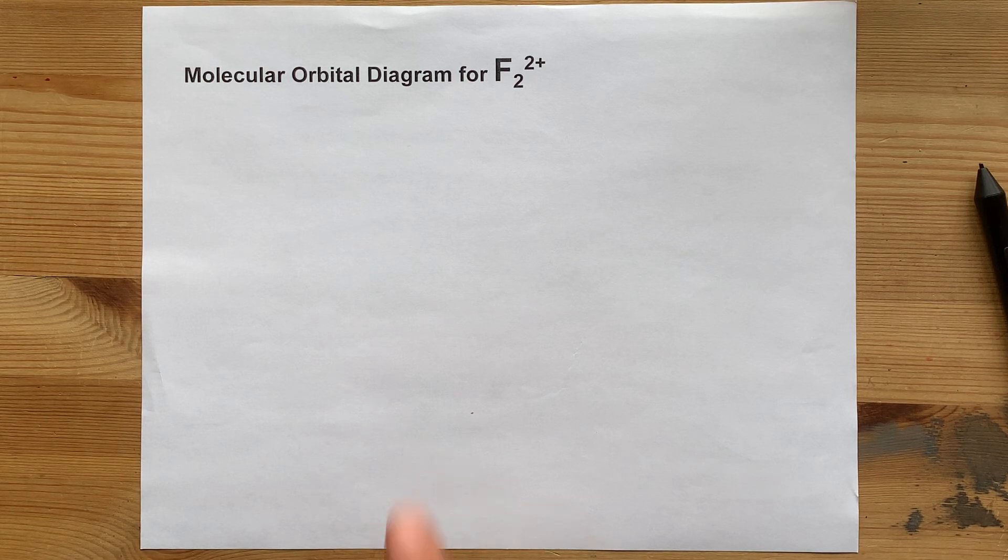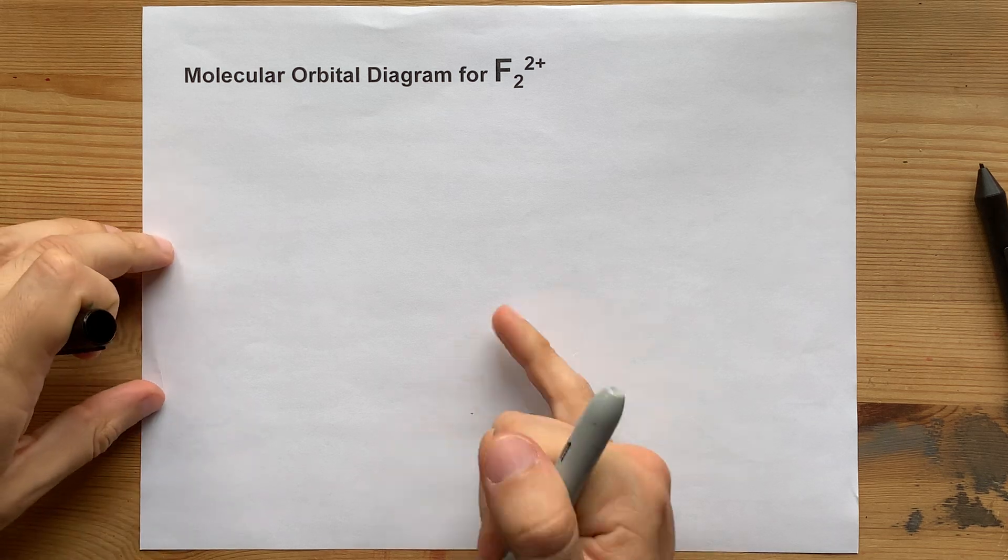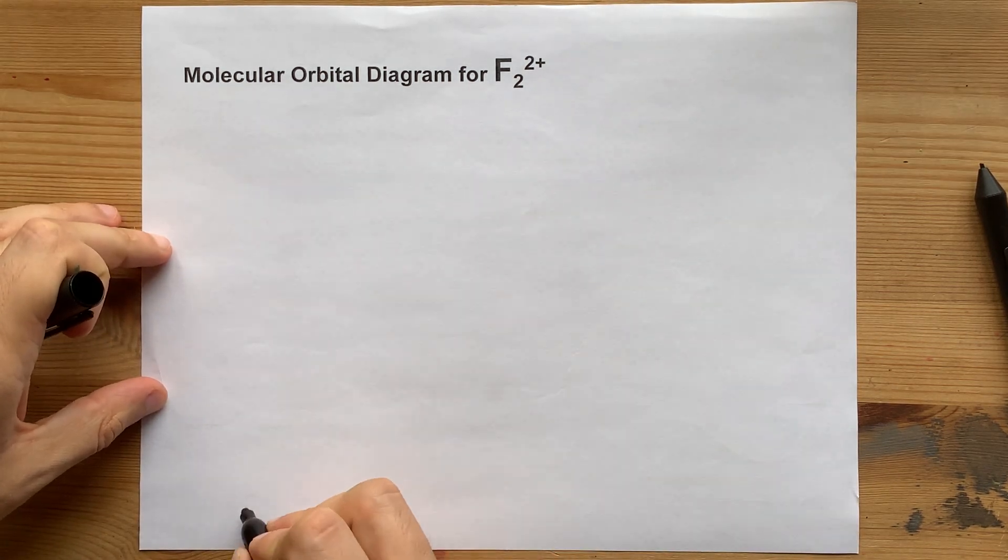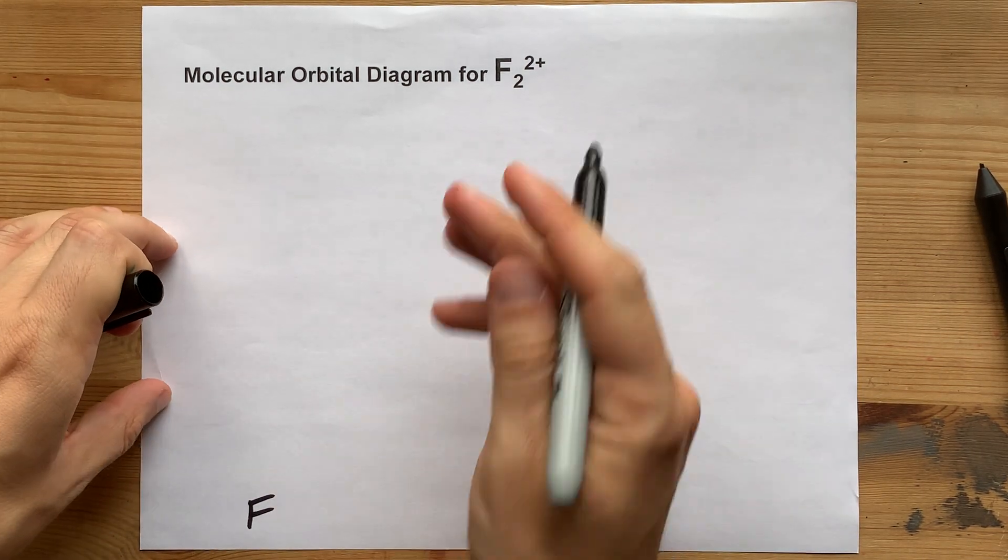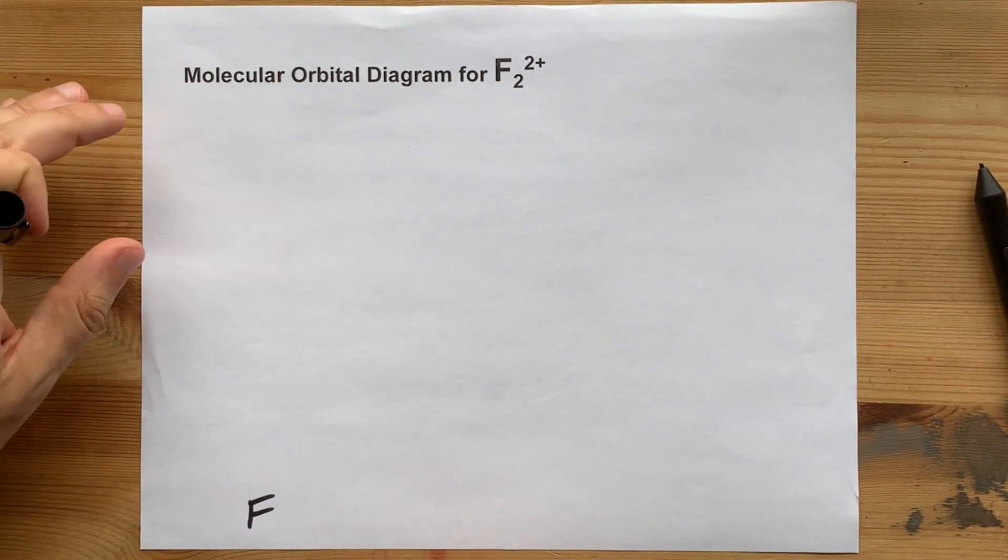Let's draw the molecular orbital diagram of F2 with a 2+ charge. Let's begin with the atomic orbitals for F. I'm going to ignore the first shell because it's non-bonding, it's not the valence shell.